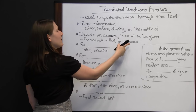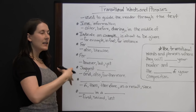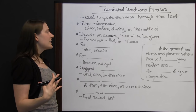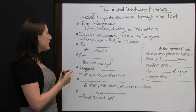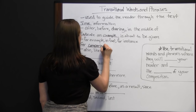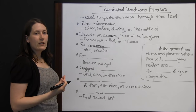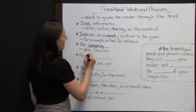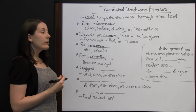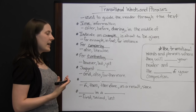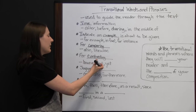Transitions can be used for comparing — words like 'also' and 'likewise' show how two things are alike. They can also be used for contrasting — 'however,' 'but,' and 'yet' show how two things are different. For example, you'd like a dog as a pet because they're so companionable, but a cat is not going to be as affectionate. Transitions can also suggest addition — 'and,' 'also,' and 'furthermore' let you know that more information, more examples, or more details are coming.